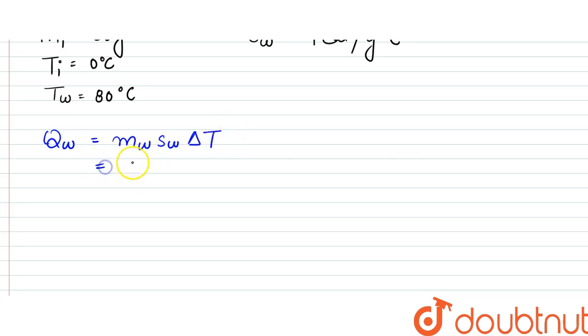So this would be equal to mw is 50 into sw is 1 into delta T, so that would be 50 minus T. The equilibrium temperature, let the equilibrium temperature be T, the final temperature.